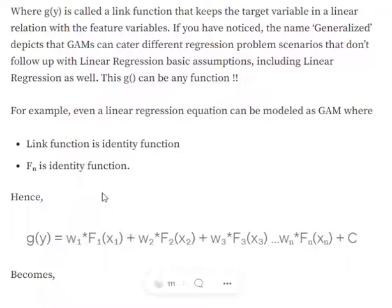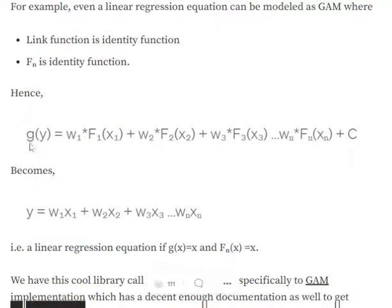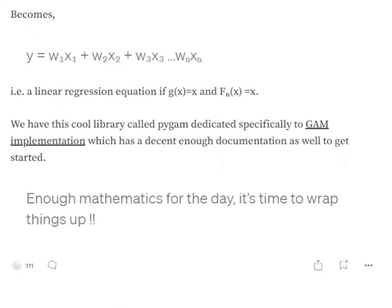The term 'generalized' comes from the fact that GAMs can be used to represent any regression problem, whether linear or non-linear. For example, if the link function g is the identity function — meaning g(y) = y — and f(n) is also the identity function, then the GAM equation reduces to a standard linear regression equation. So any type of regression can be derived from GAMs depending on the choice of f(n) and g(y). When both are identity functions, we get a linear regression equation.